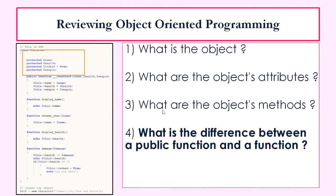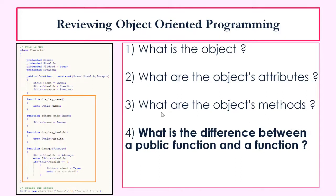What are the object's methods? Remember, the methods are what behavior the object can do. So we know that the object can display names, rename a character, display health, and do damage. The construct method up here is an automatic method that is called when you first create an object. If you don't know what that is, go back to the previous video. When you create an object, this will be automatically executed.